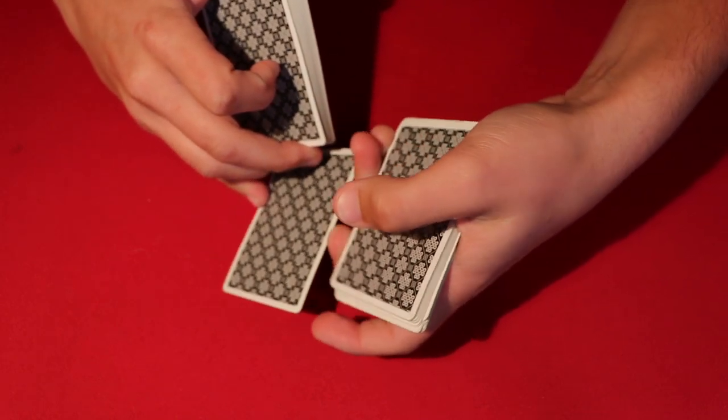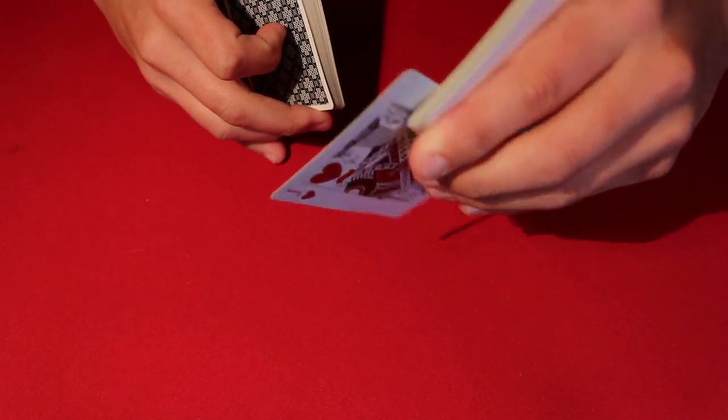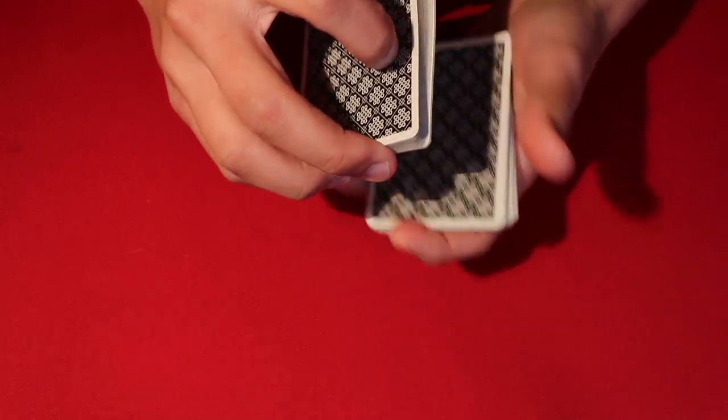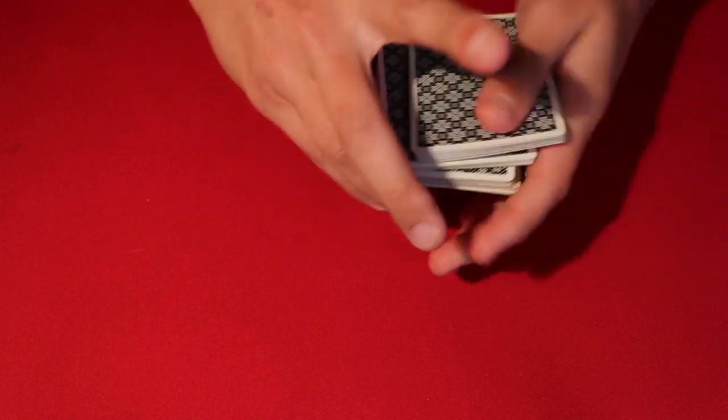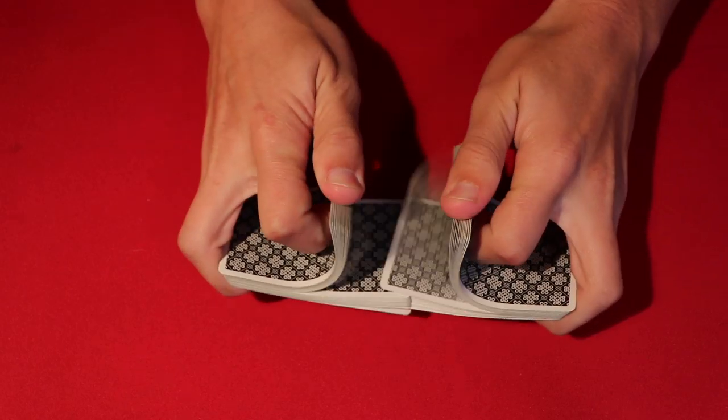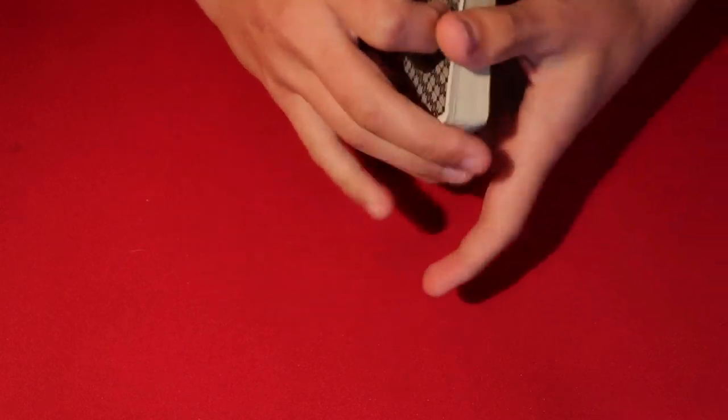The spectator loses the card somewhere into the middle of the deck. You just put it somewhere, and then essentially the way the rest of the trick works is you shuffle up the pack and the card just gets lost into the middle somewhere.